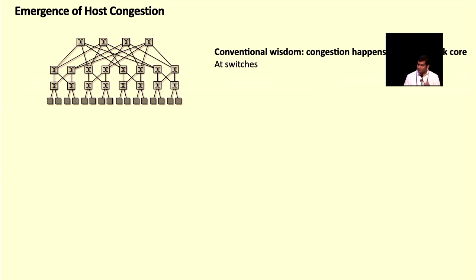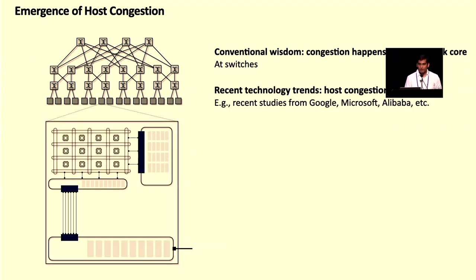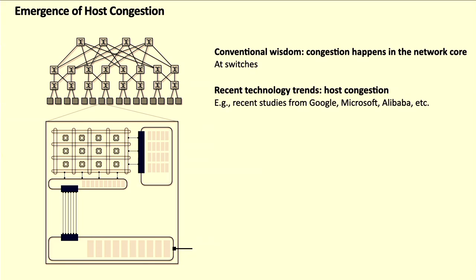Conventionally, the wisdom in our community is that congestion happens primarily in the network core — at network switches — due to oversubscribed topologies, incast traffic patterns, poor load balancing, etc. However, several recent studies from large-scale production clusters have demonstrated a new phenomenon: emergence of congestion within the end-hosts. With the adoption of multi-hundred gigabit access-link bandwidths, coupled with relatively stagnant technology trends for resources within the hosts — such as cache sizes, memory bandwidths, and memory access latencies — host congestion has emerged.